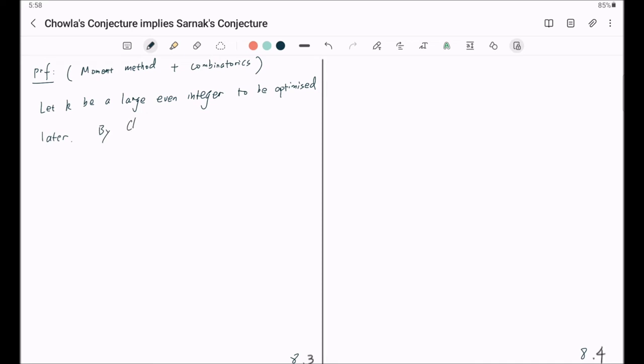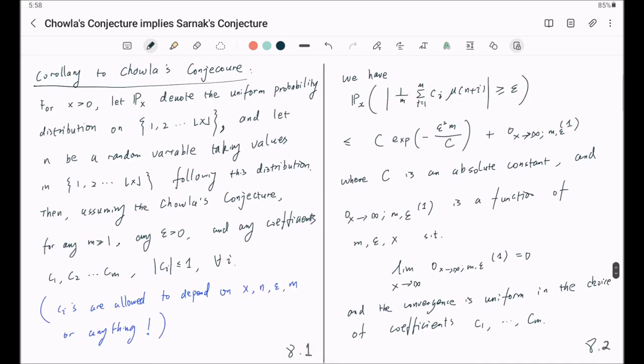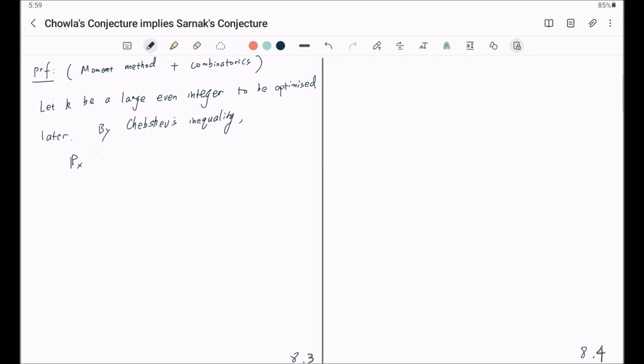This k will serve as the exponent for the moment. Now, by Chebyshev's inequality, we have, what we are going to do now is that we are going to lift the sum to higher powers. So, this probability is less than or equal to... What we are using here is simply the probability of a random variable bounded away from zero by epsilon is less than or equal to its k-th moment divided by epsilon raised to power k. This is the Chebyshev's inequality we are using here.